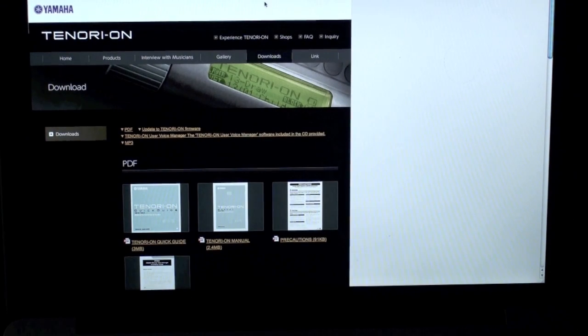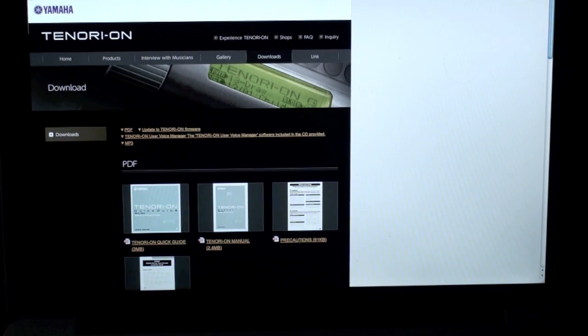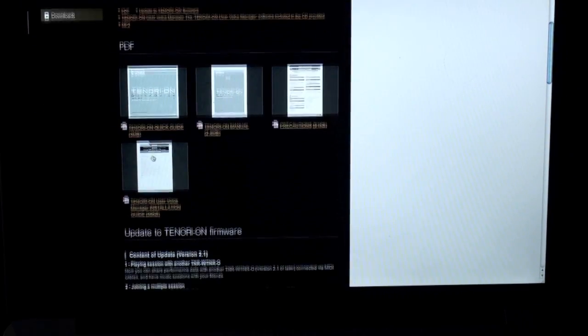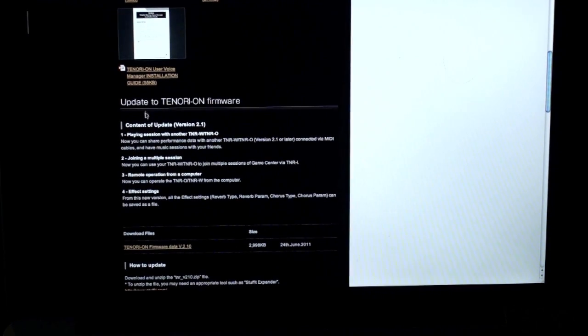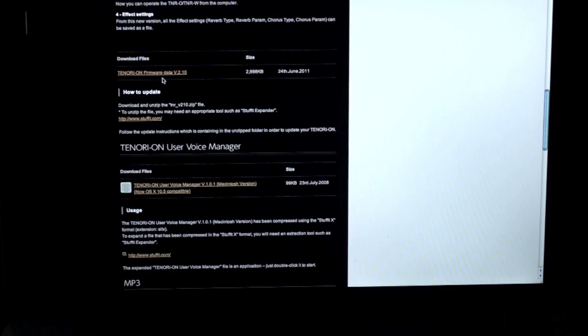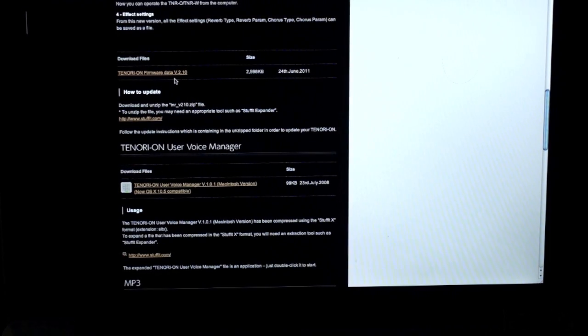Now, please go to the webpage, Tenori On Yamaha Global Gateway. You can find this by searching for Tenori On OS 2.1 or a variety of other things. Here you can download current versions of the manual, but scroll down the screen until you get to update Tenori On firmware. Go ahead and download Tenori On firmware data version 2.10 and then follow these instructions.